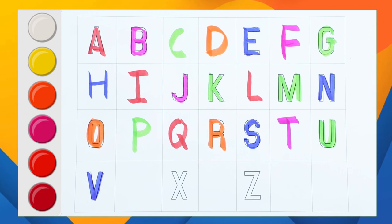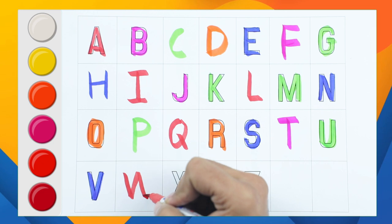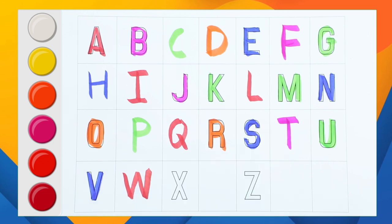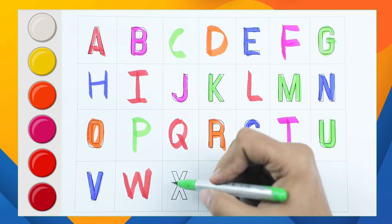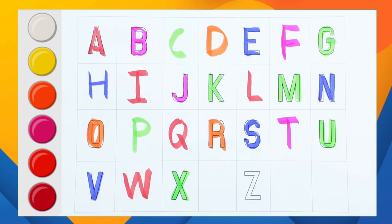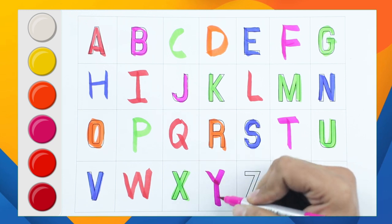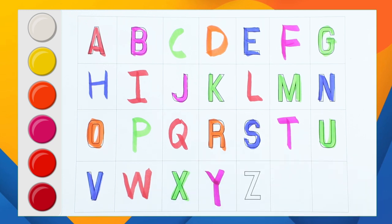What next? W, it's W, W for watch. X, X for xylophone. Y, it's Y, Y for yak. And Z, Z for zebra. A, B, C, D, E, F, G, H, I, J, K, L, M, N, O, P, Q, R, S, T, U, V, W, X, Y, Z.